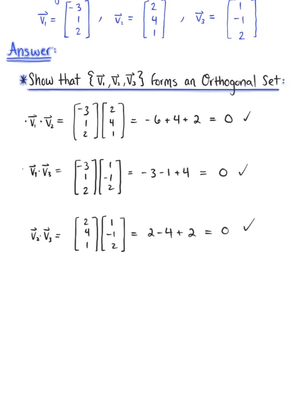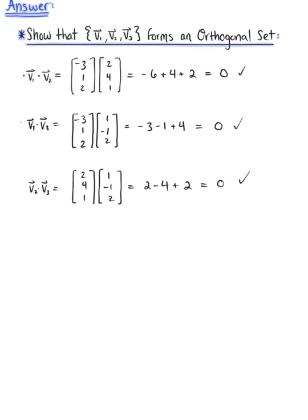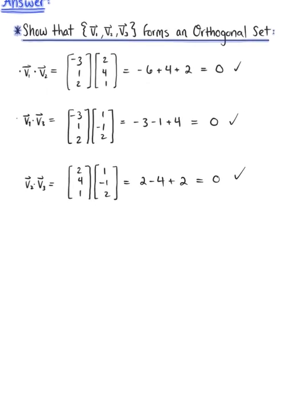We have shown that all distinct pairs of vectors in this set are orthogonal. And so we can conclude that therefore, the set of vectors V₁, V₂, V₃ is an orthogonal set.